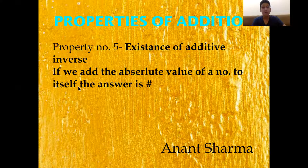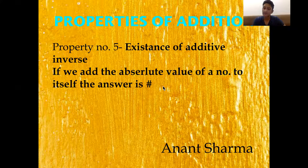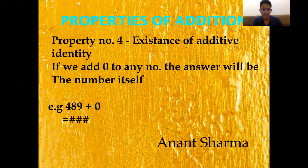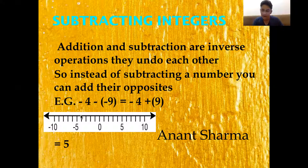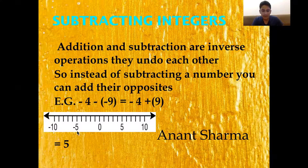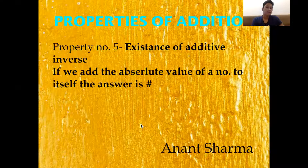Property number 5 is the Existence of Additive Inverse. The absolute value of a number is basically its opposite on a number line. For example, the absolute value of 4 is minus 4. To find the absolute value of minus 5 on the number line: minus 5 is 5 places to the left of 0, so its absolute value is 5 places to the right of 0, which is 5.